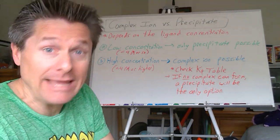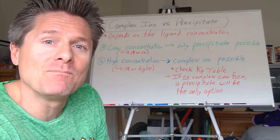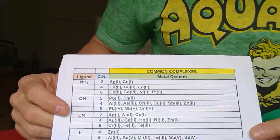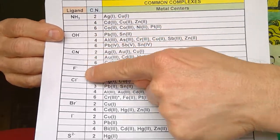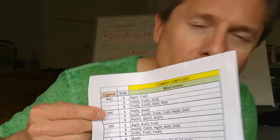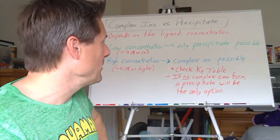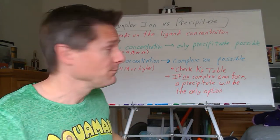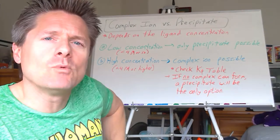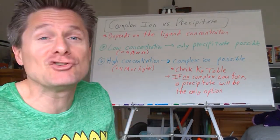Remember, not every metal ion can form complex ions. If no complex ion is possible, a precipitate will be your only viable option. Check your coordination number table — if you don't see the metal-ligand combination, that's not a viable combination and you can't form the complex ion. But if you see the combination, you can form that complex ion. Let's look at a couple of examples — we'll start with an easy one, then a harder one using Hess's law manipulations of K values.